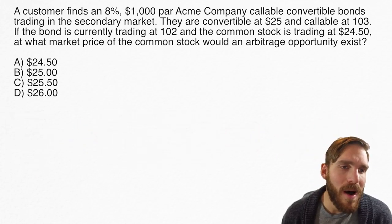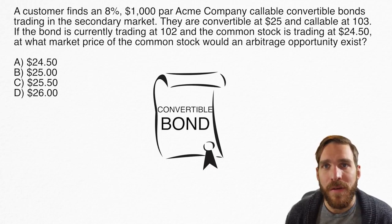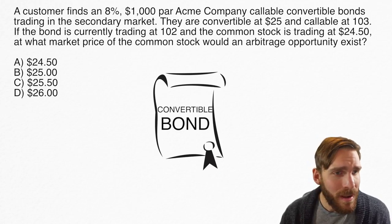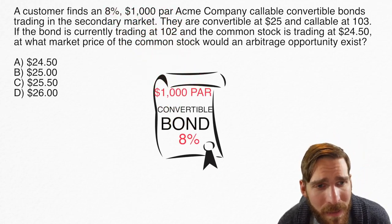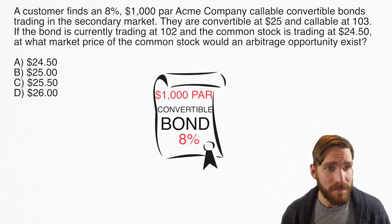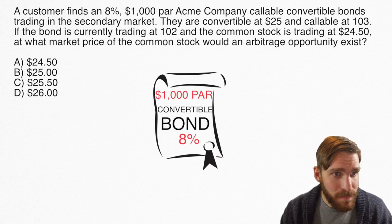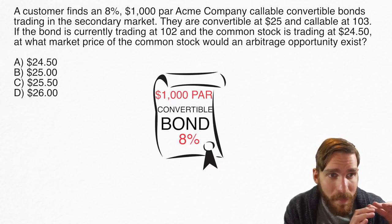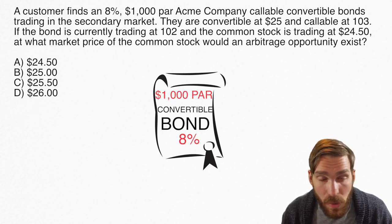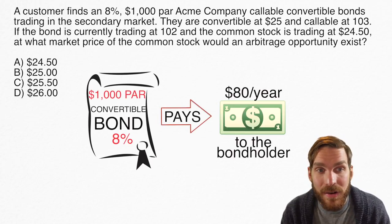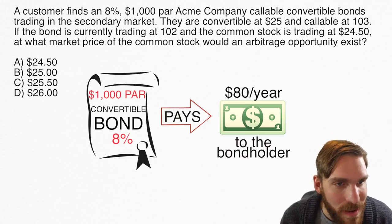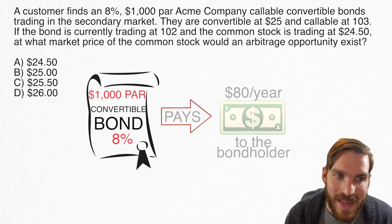A convertible bond is just a regular bond that has an additional feature attached to it. Looking at how it's a regular bond: 8%, $1,000 par — whoever holds this bond is going to get paid $80 a year, because 8% of $1,000 is $80. Bonds pay their nominal interest rate based upon their par value. Whoever holds it gets paid $80 every single year until the bond matures.